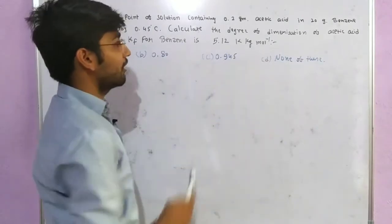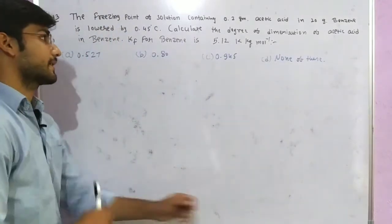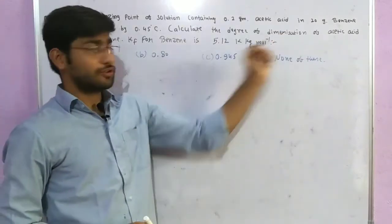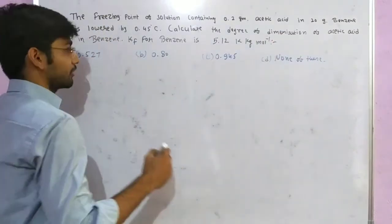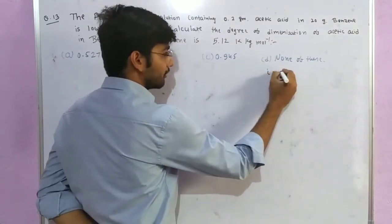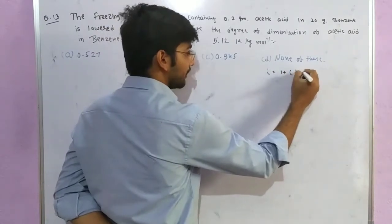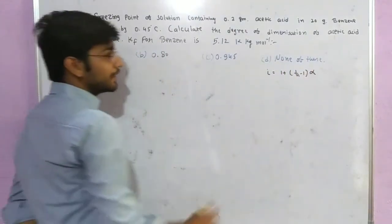The topic is about degree of dimerization. To calculate the degree of dimerization, the formula is: i equals one plus one upon n minus one into alpha, where alpha is the degree of dimerization.